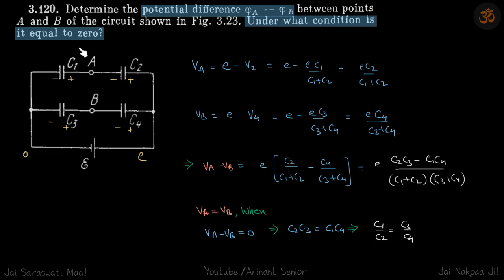Now, under what conditions is it equal to zero? If VA minus VB equals zero, which means VA equals VB, that happens when the numerator of this term is zero. So C1 C3 equals C1 C4, or C1 by C2 equals C3 by C4.